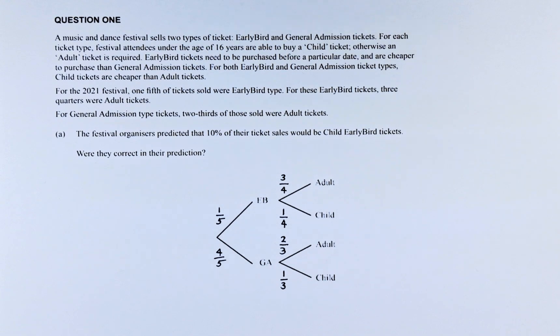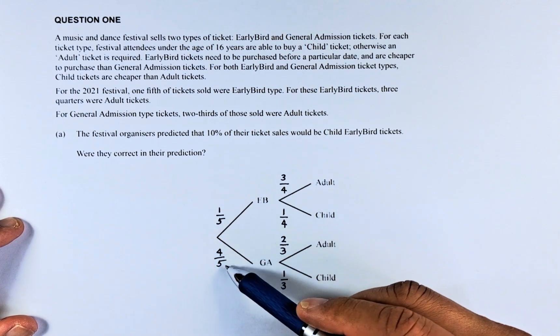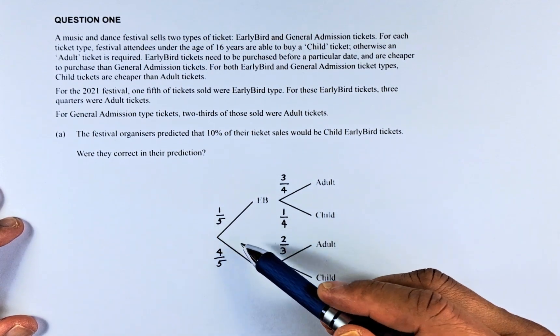For the 2021 festival, one-fifth of the tickets were early bird. So early bird is EB, one-fifth. So general admission will be four-fifths because one-fifth plus four-fifths will give us one.